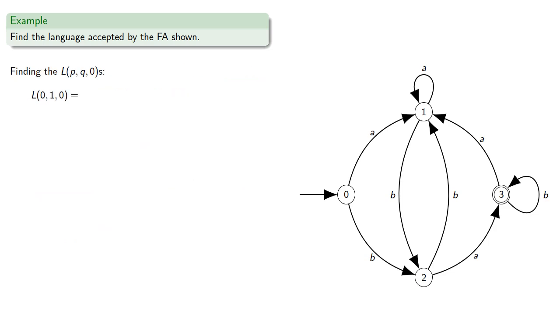So l(0,1,0), that's from 0 to 1, not passing through anything higher numbered than 0, that's just a. l(0,2,0), that's from 0 to 2, not passing through anything higher numbered than 0, is b. And l(0,3,0), from 0 to 3, not passing through anything higher numbered than 0, that's the empty language. So remember the difference between the empty language, which contains no strings at all, and the empty string, which is a string that contains no elements.